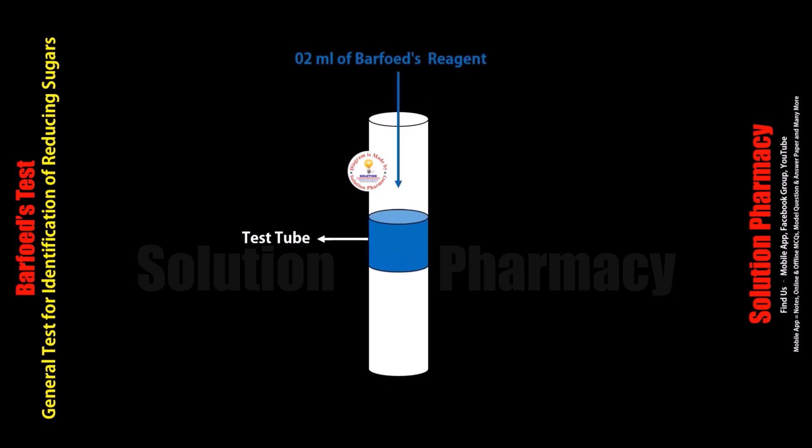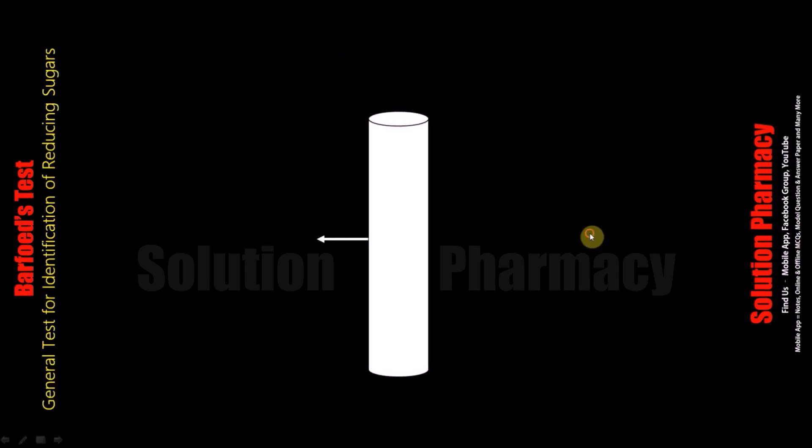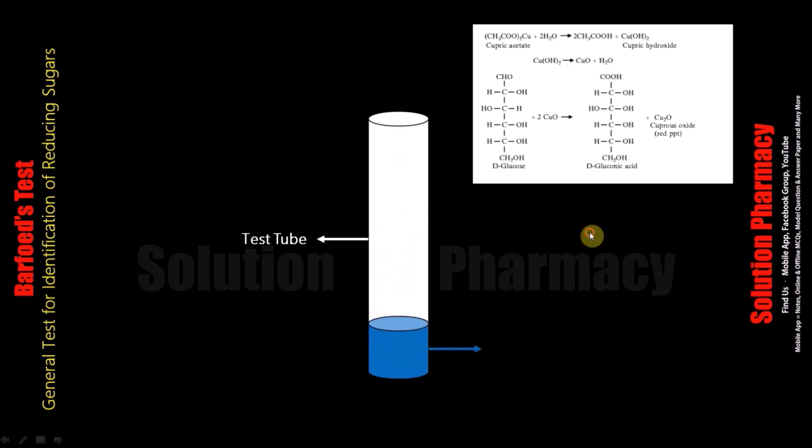First of all, take a clean and dry test tube, then add 2 ml of Barfoed's reagent with the help of a pipette. After transferring 2 ml of Barfoed's reagent in the test tube, add 2 ml of the test solution.